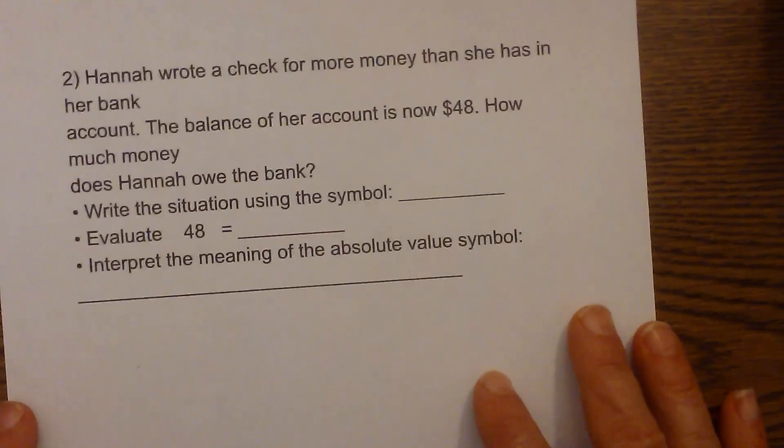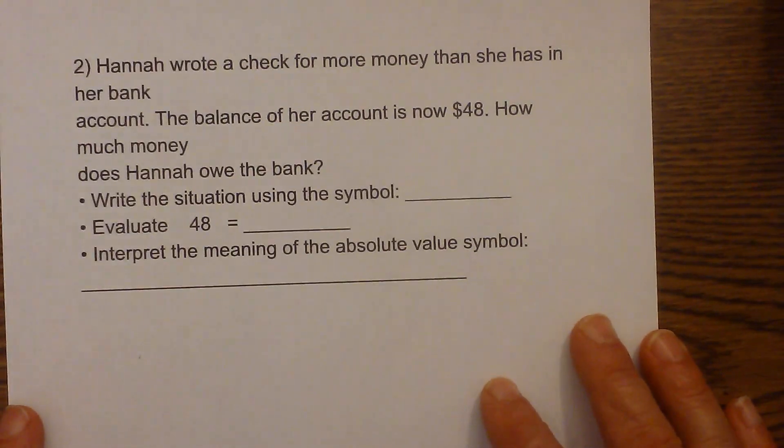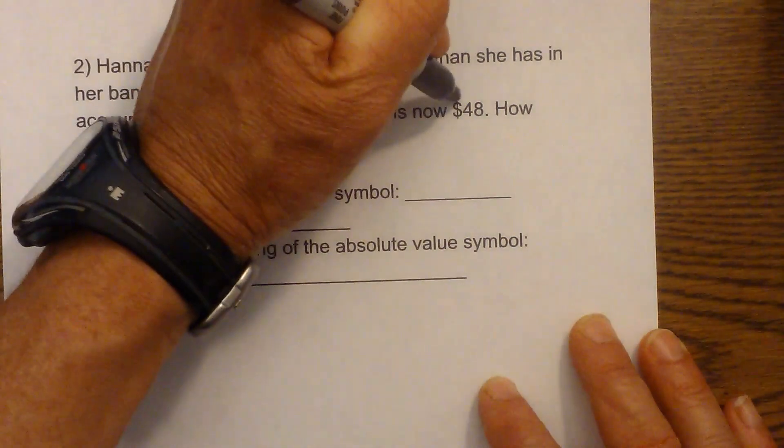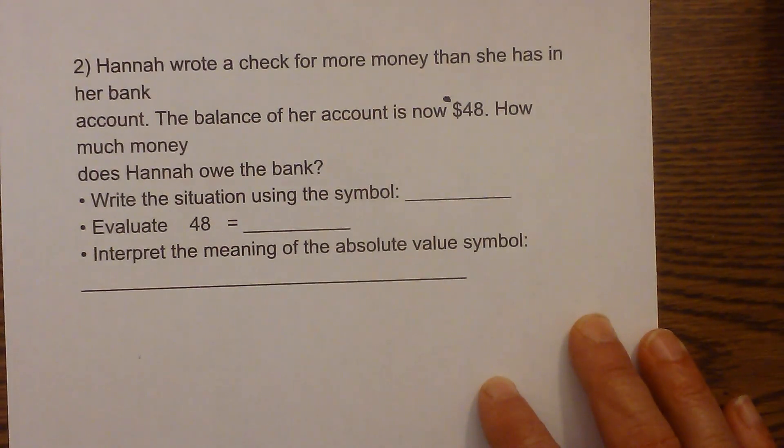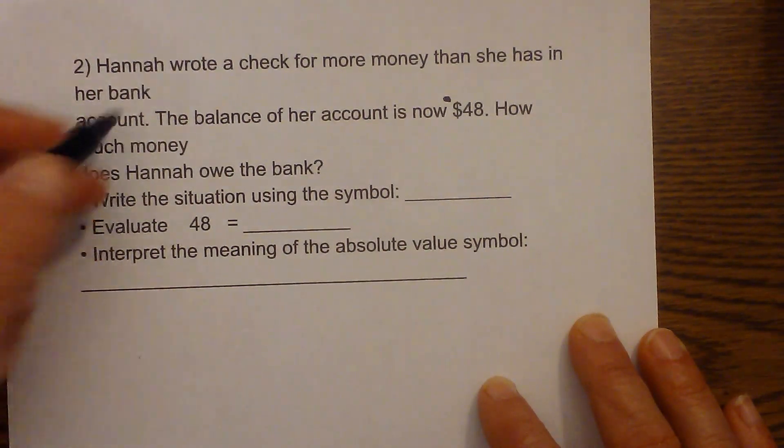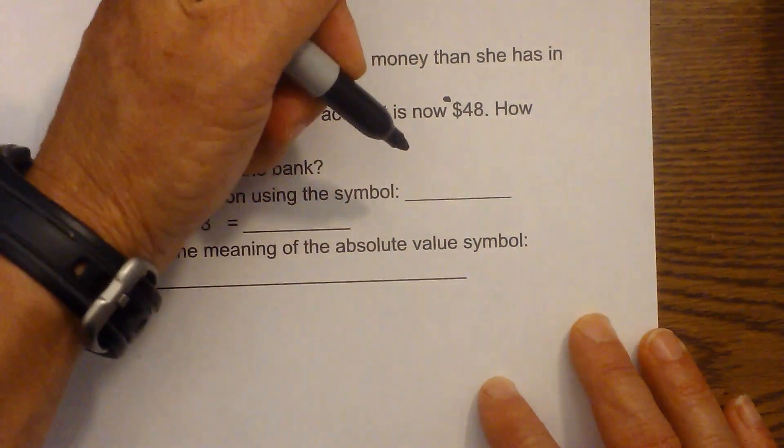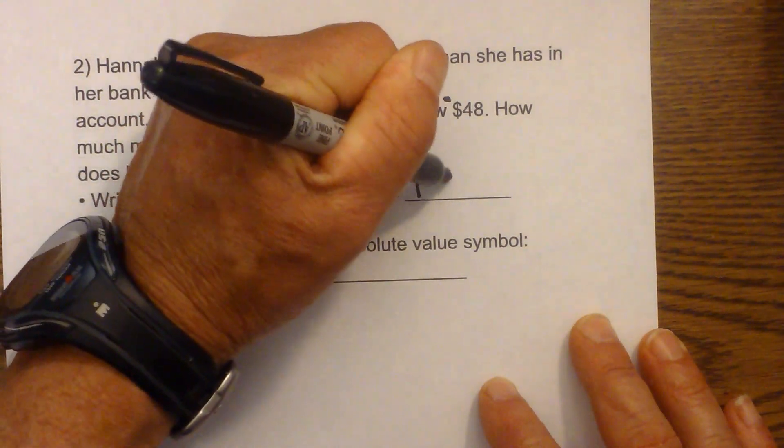Now let's look at one more situation. Hannah wrote a check for more money than she has in her bank account. The balance in her bank account is now negative $48. How much money does Hannah owe the bank? Write the situation using the absolute value symbol. It would be |-48|.